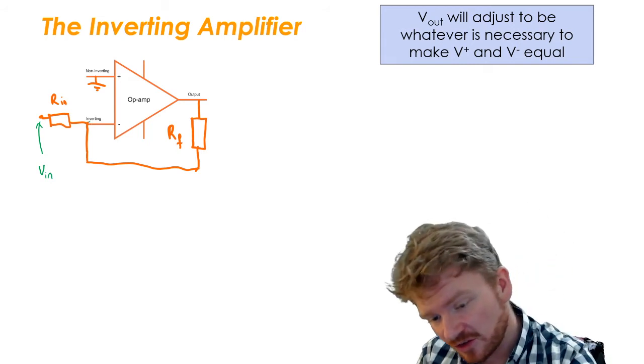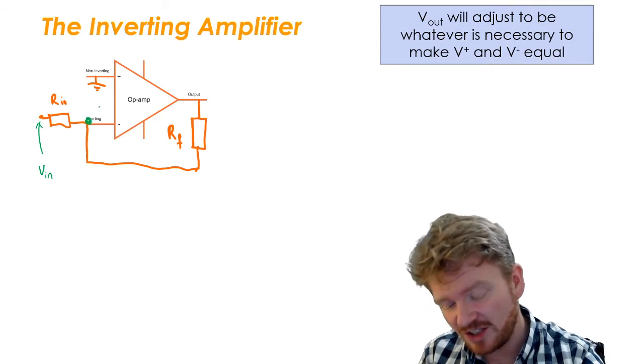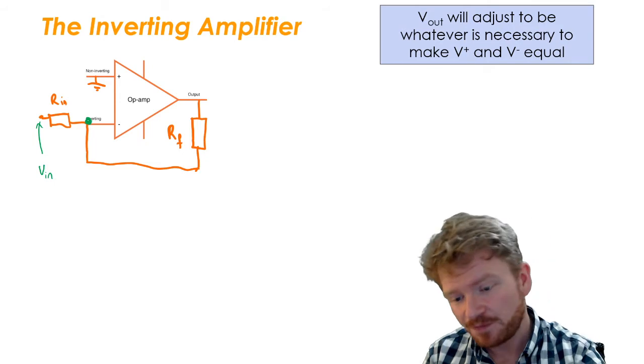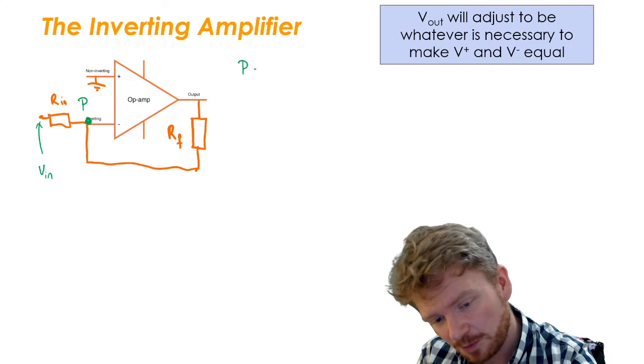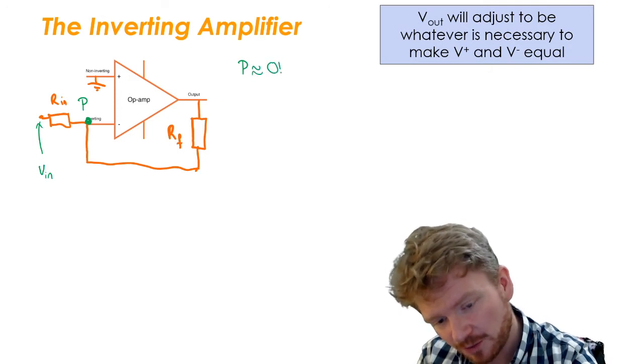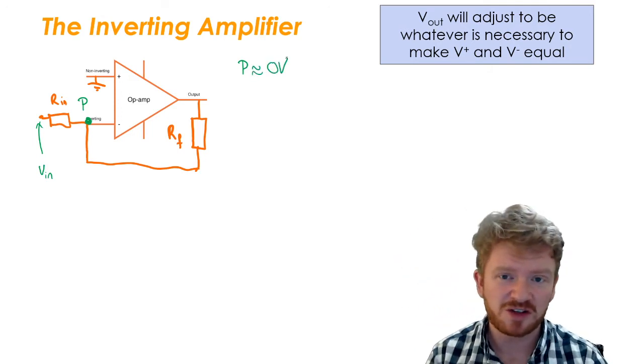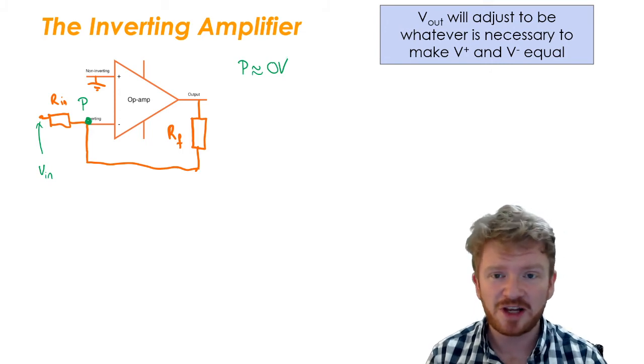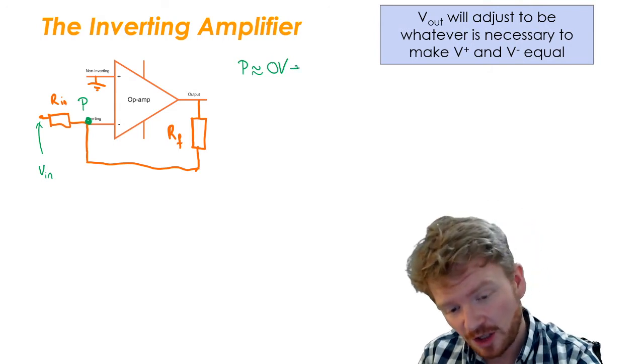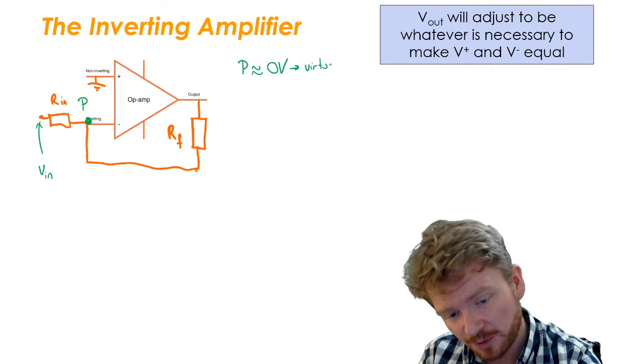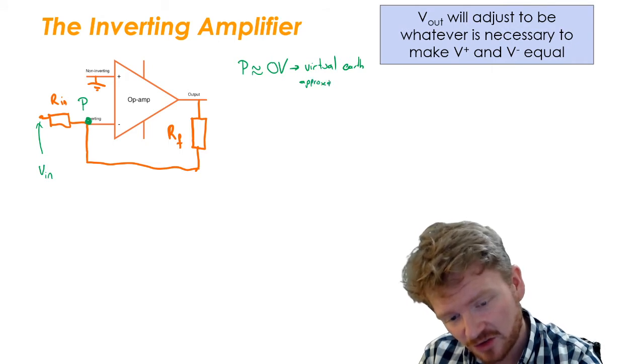So in this instance we have the non-inverting input connected to ground. That means if you remember that we have point P, I can say that in this case point P will have a potential of approximately zero volts. And as we discussed last time, it won't be exactly zero volts but it will oscillate around nearly zero volts. So this is a virtual earth, or the virtual earth approximation. If you're unsure about how we got that, you must go back and check it, okay, because it's really really important.